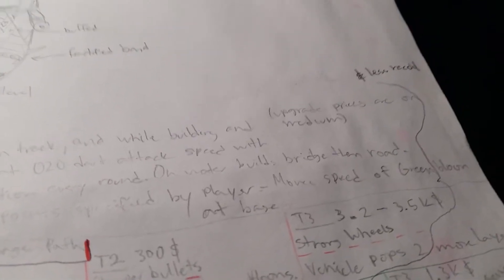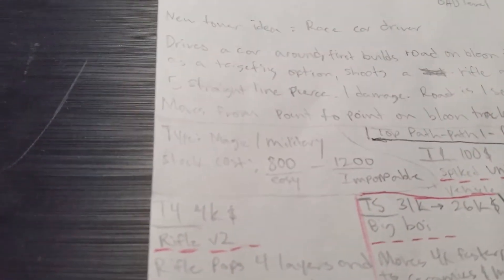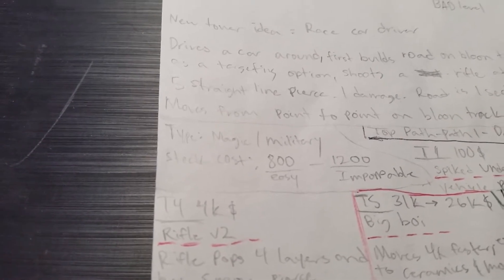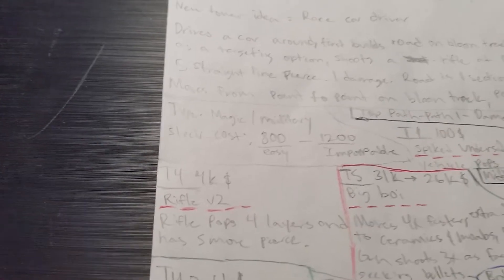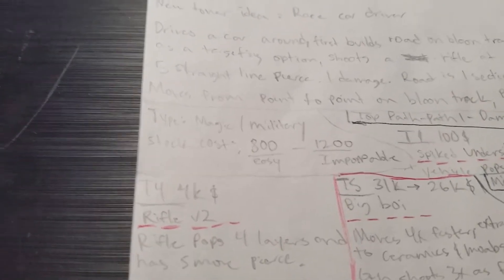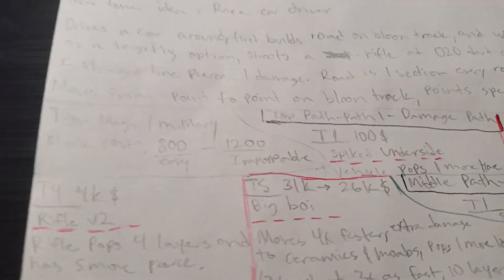All the upgrade prices shown are on medium. The type or category it's in, I would consider it to be magic or military, and the stock cost on easy will be 800, and then in Impoppable it'll be 1,200.